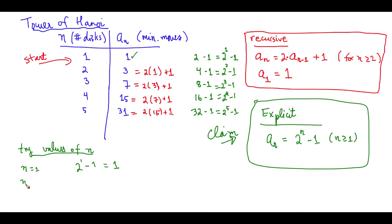How about n equals 2? 2 to the 2nd minus 1 really does equal 3. Check — that works for this step. We could keep going on and on forever, but we don't actually have enough time to do this forever. So we need a better way to approach this problem.